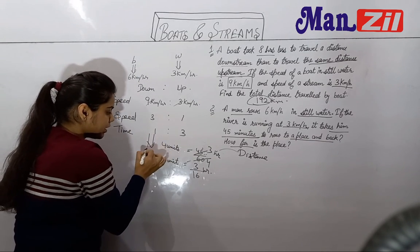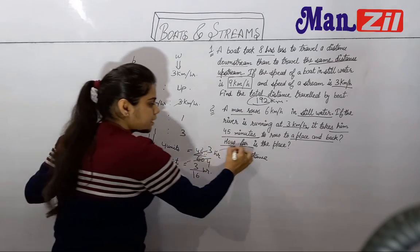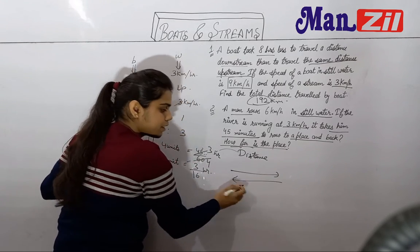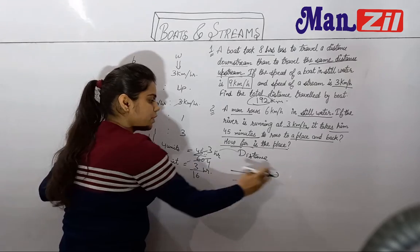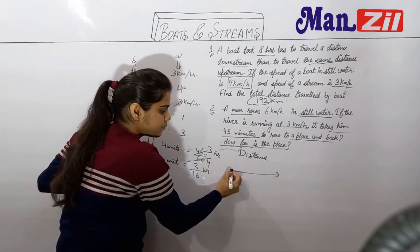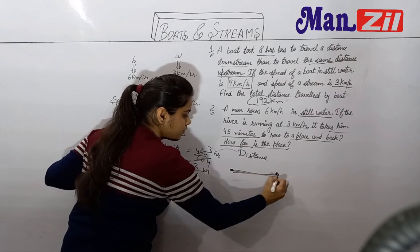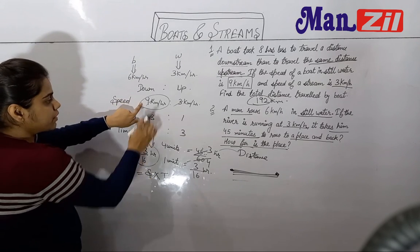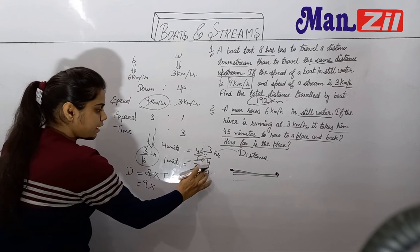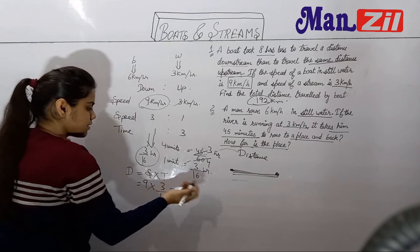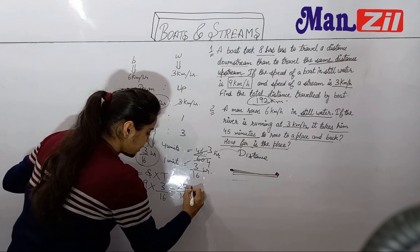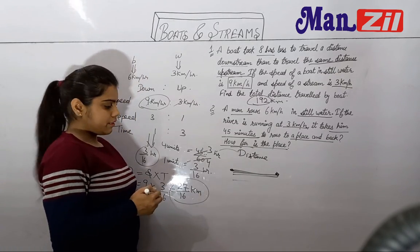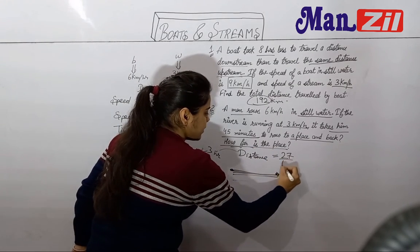Now we have 1 unit's value as 3 by 16 hours. They asked us for the one-way distance — from one point to the other. Using distance equals speed into time: downstream speed is 9 km per hour and time is 3 by 16 hours, so 9 into 3 by 16 gives us 27 by 16 km. So your answer is 27 by 16 km.